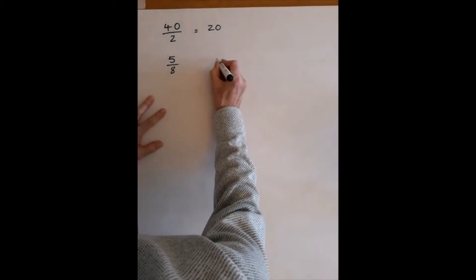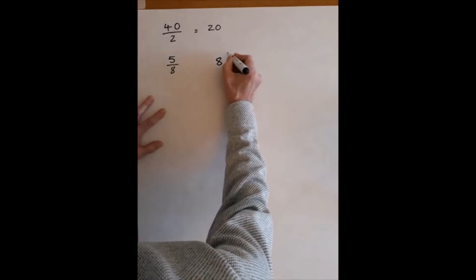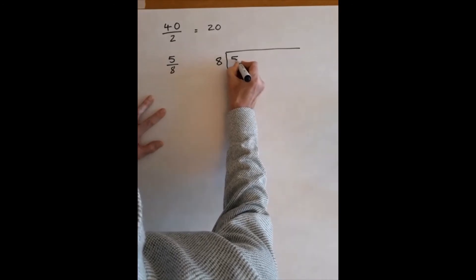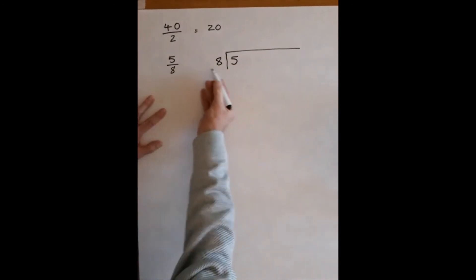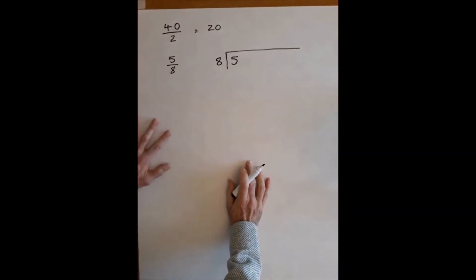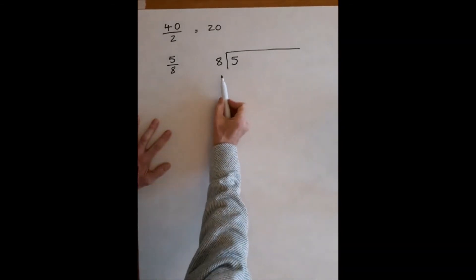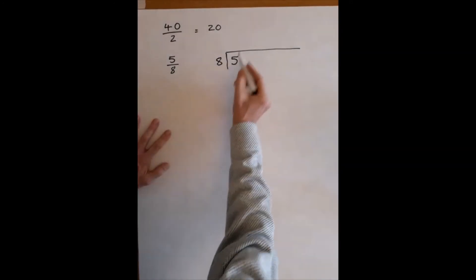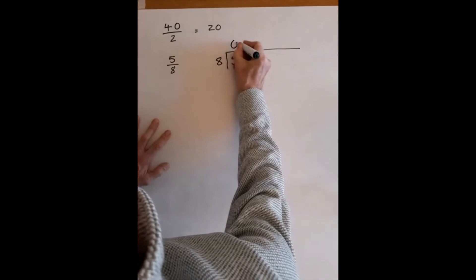So what we're going to do is we're going to say, how many times does 8 go into 5? And we're going to do this manually, as you should have been taught many years ago in school. So 8, how many times does 8 go into 5? Well, the answer is none. 8 doesn't go into 5.